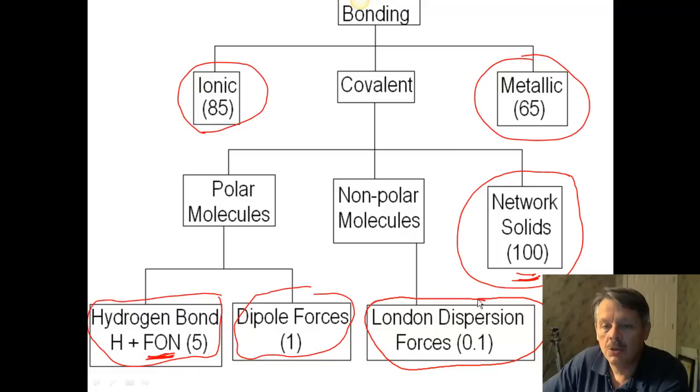So you should know those. You should know them in order. You don't need to know these numbers, but you do need to know, for example, that network solids are stronger than ionic, which are stronger than metallic, et cetera. You need to know that order.